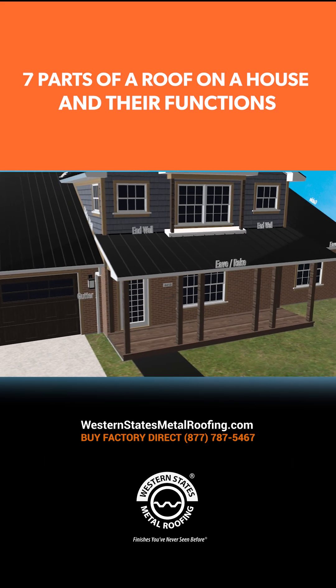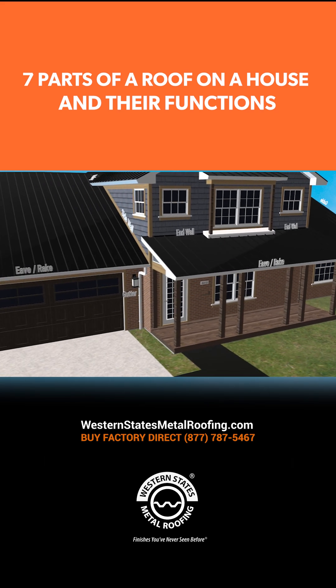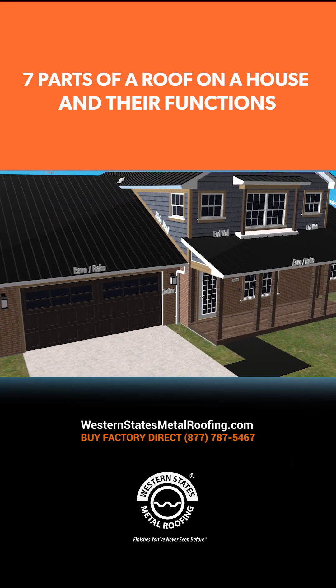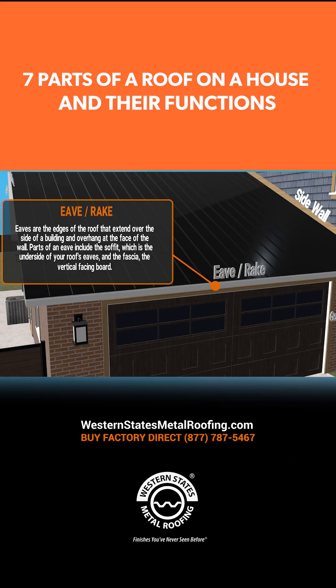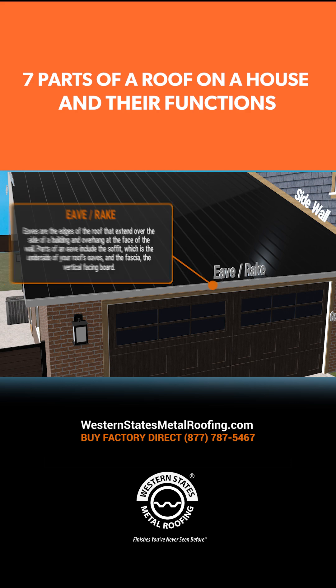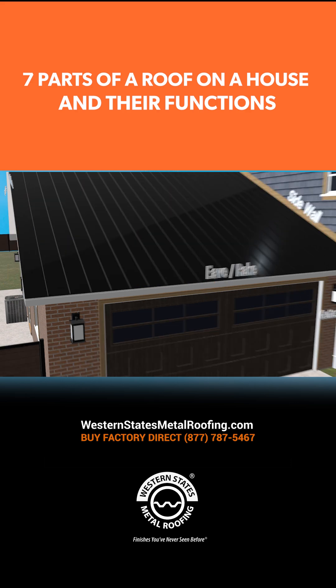Eaves are the edges of the roof that extend over the side of a building and overhang at the face of the wall. Parts of an eave include the soffit, which is the underside of your roof's eaves, and the fascia, the vertical facing board.